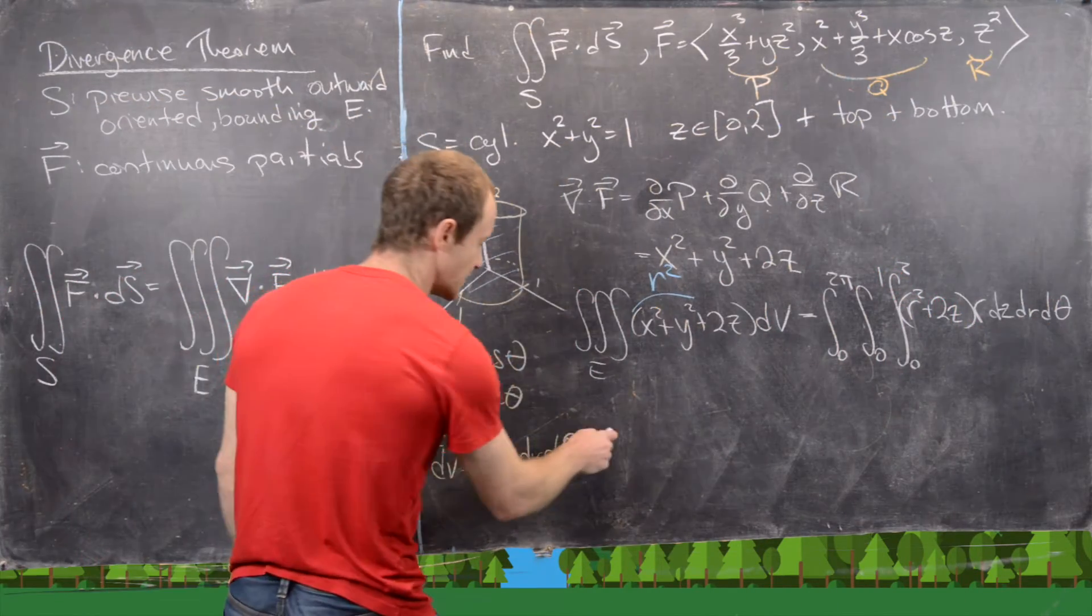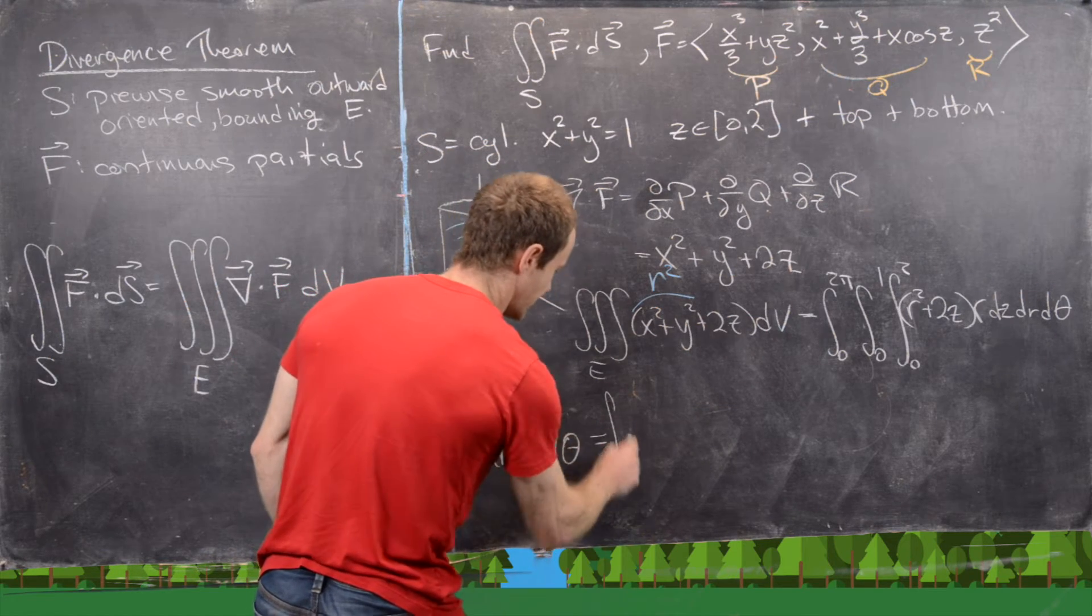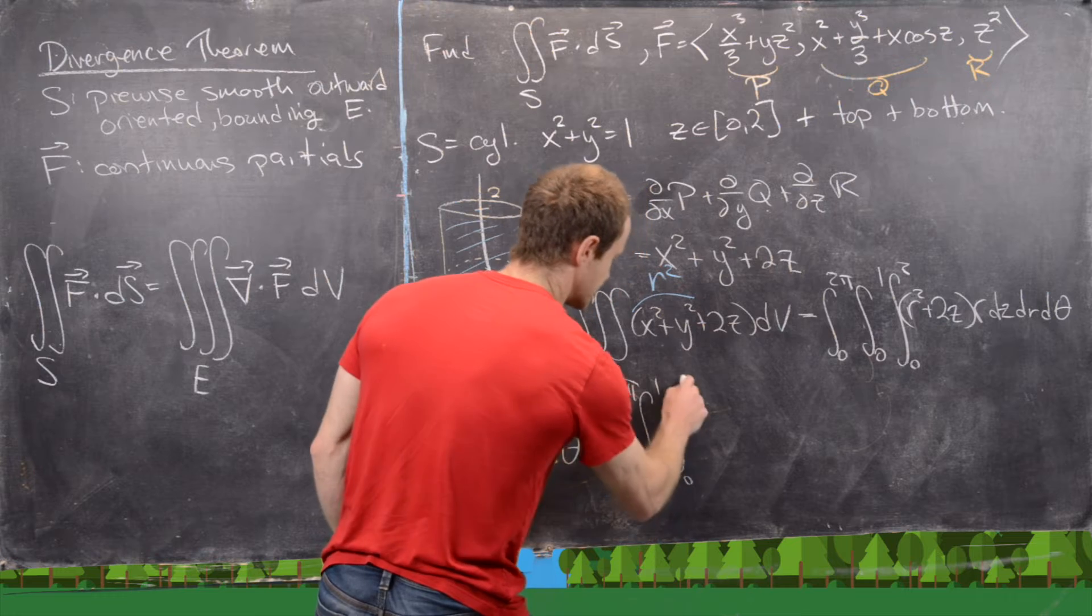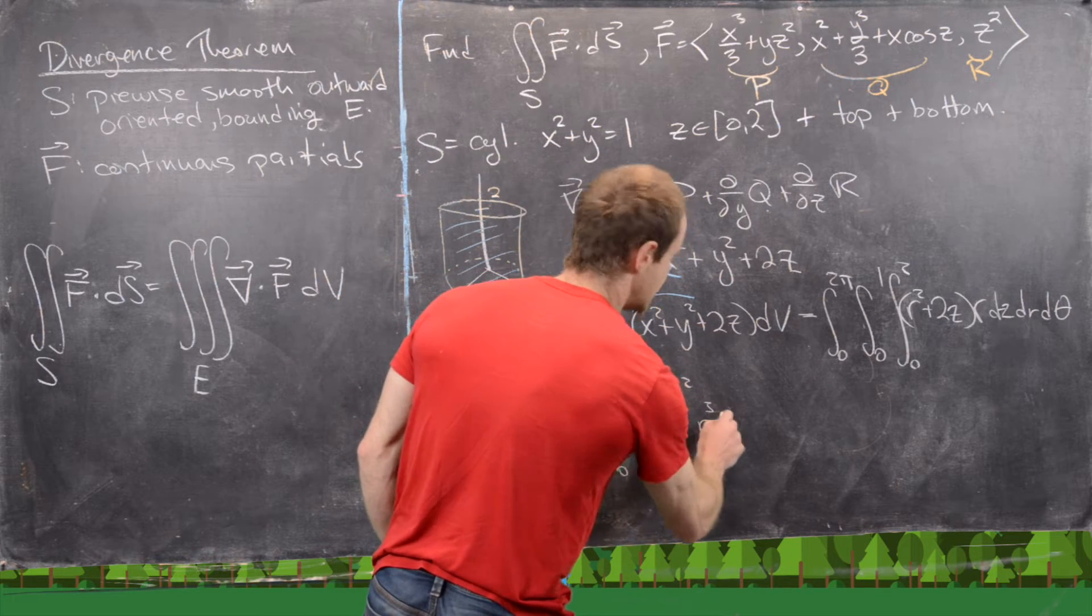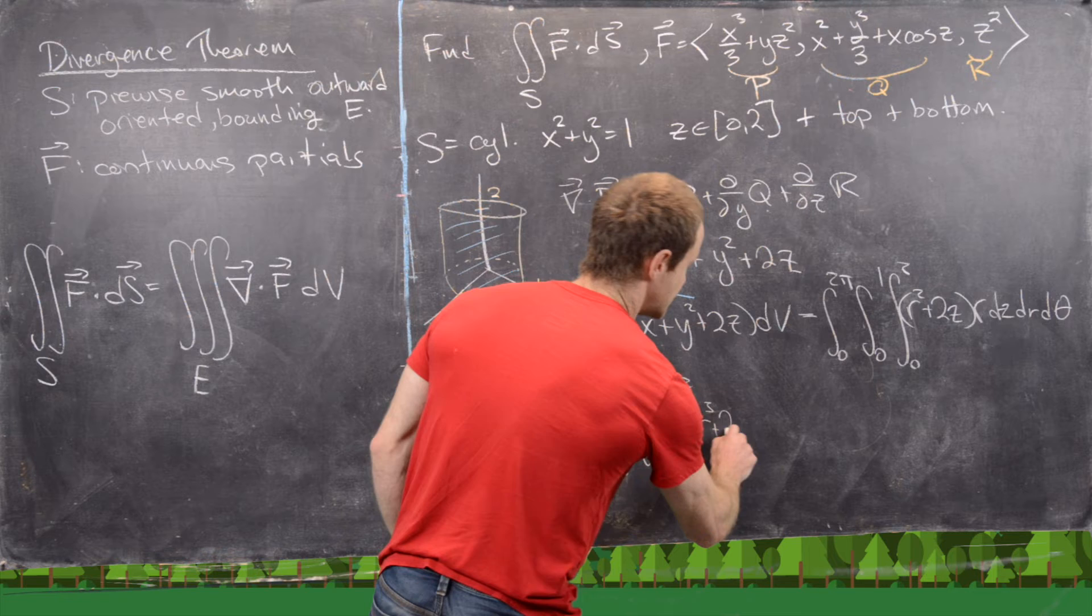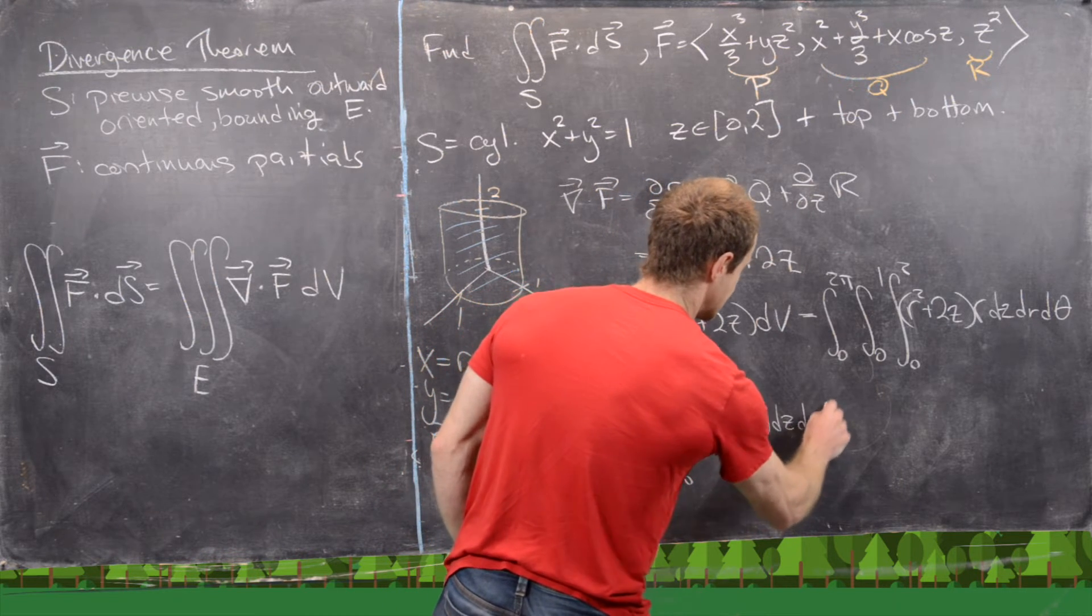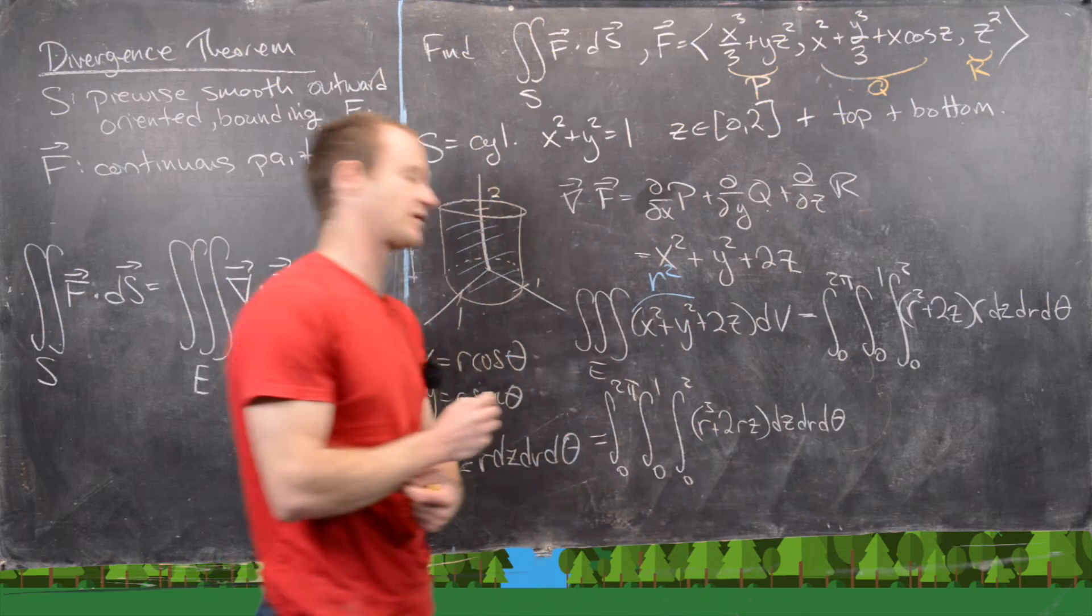So we need to multiply that out a little bit. We've got the integral from 0 to 2pi, the integral from 0 to 1, the integral from 0 to 2, and now we've got r cubed plus 2rz, dz integral first, dr integral second, d theta integral last.